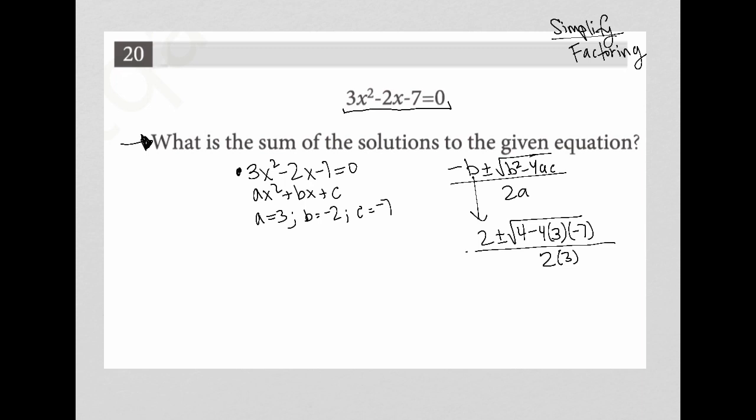So from there, just moving right to left, I will have 2 plus minus square root of 4. And then let's just simplify all of this. Negative 7 times 3 is negative 21, times negative 4 is positive 84. So this becomes 4 plus 84 all over 6.